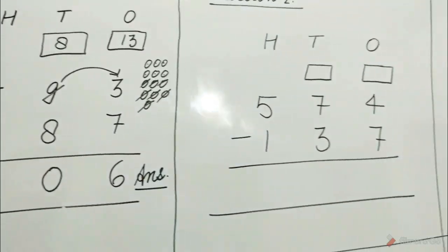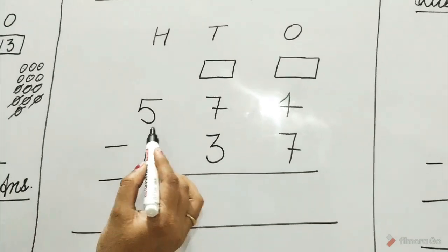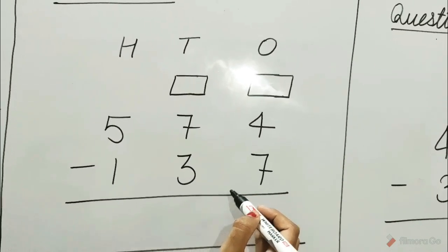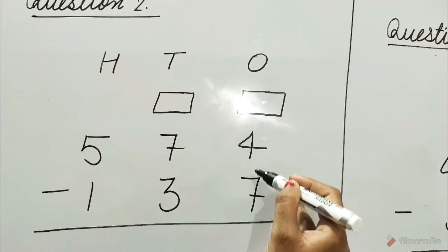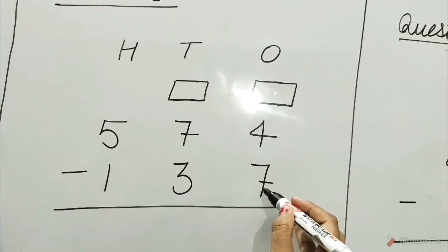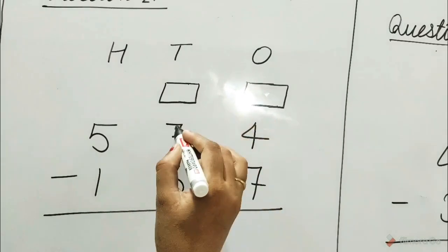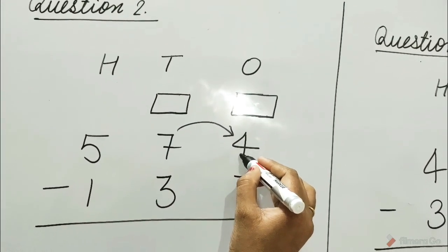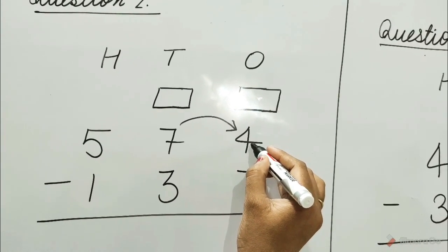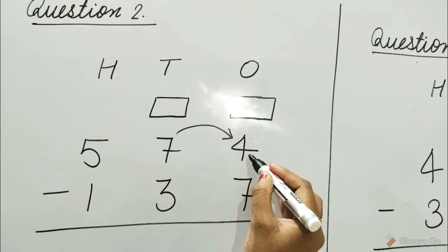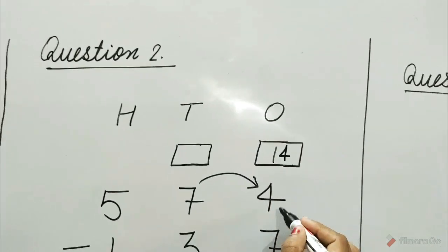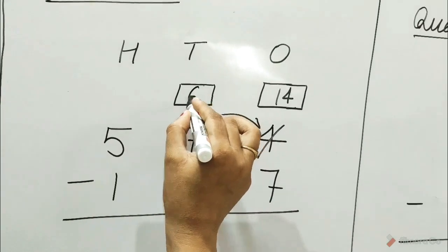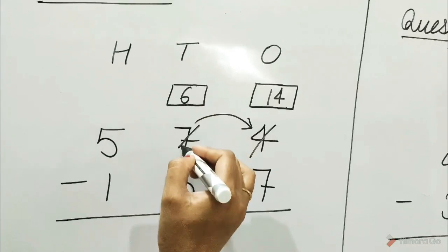Question number 2: 594 minus 137. Look at the ones column, children. 7 is bigger than 4 so it cannot be subtracted. We will borrow 1 ten from the tens column and add it to the 4 ones. 1 ten is equal to 10 ones. 10 ones plus 4 ones is equal to 14 ones. Write 14 at the place of 4, and 6 tens are left in the tens column.